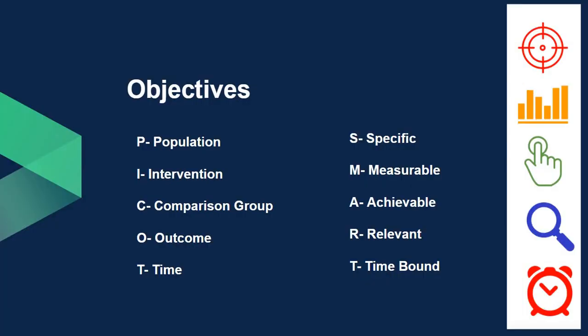We now move on to objectives. If a good researcher or reviewer wants to read your protocol, they choose objectives first. While writing objectives, we should keep these acronyms in mind: PICARD and SMART. PICARD: P stands for population, I stands for intervention, C stands for comparison group, O stands for outcome we are expecting, and T stands for time.